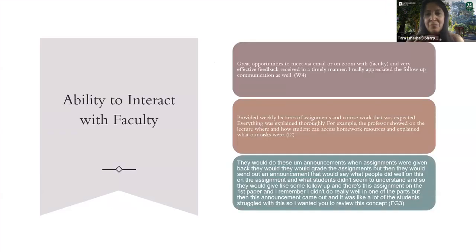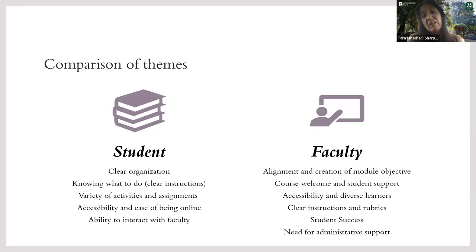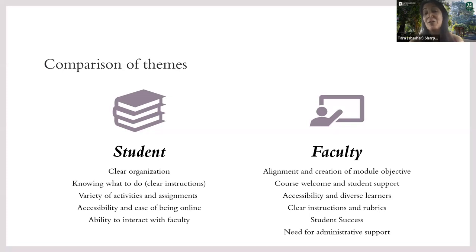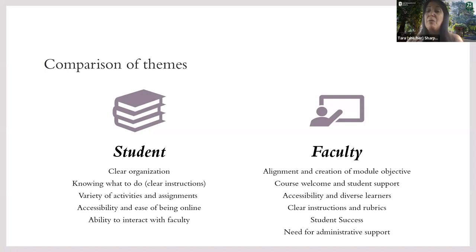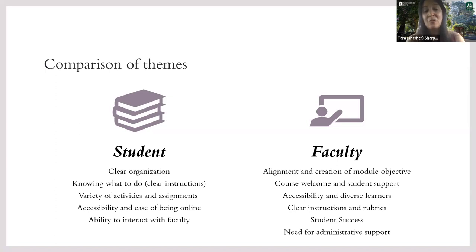When we compared the student themes with the faculty themes, a few of them overlapped. Clear organization and detailed instructions were themes for both — faculty commented a lot about providing more detail in their rubrics and instructions, and students really picked up on that. One big theme for faculty was accessibility; students didn't talk about that much, but did comment on universal design aspects like clear layout and organization. Engagement was something faculty felt they still wanted more of, but students talked about their ability to interact online with faculty as more of a positive — they could see more of that in Quality Matters courses.